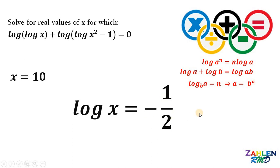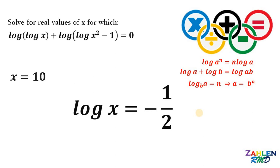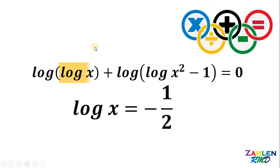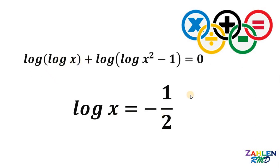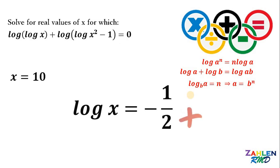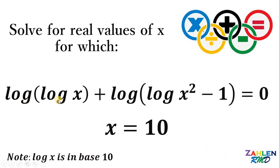Before finalizing, let's check the domain constraint. In the original equation, logarithm of x appears as the argument of another logarithm. Since the domain of a logarithm function is from 0 (exclusive) to positive infinity, logarithm of x cannot be a negative number. Therefore, logarithm of x equals negative one-half yields no real solution and is not valid. The only real value of x is x equals 10.